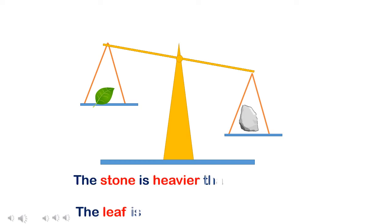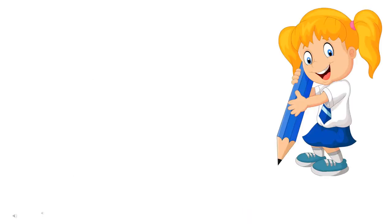So, the stone is heavier than the leaf. Or, we can say that the leaf is lighter than the stone. Okay, children.